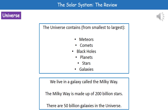When we're thinking about our whole universe, we're talking about more than just our solar system. We should remember what the universe contains, from the smallest to the largest. The smallest objects in our universe would be meteors, then comets, then black holes, then planets, then stars, and finally galaxies.